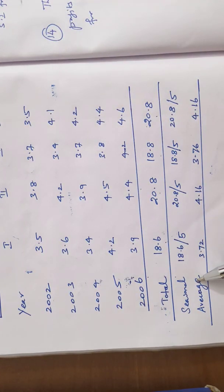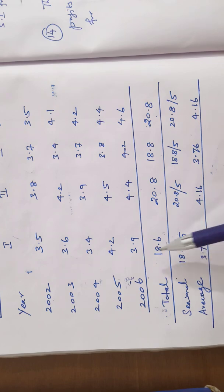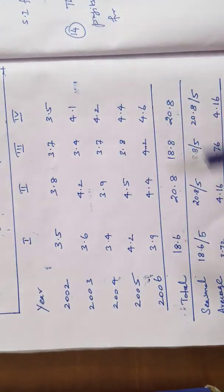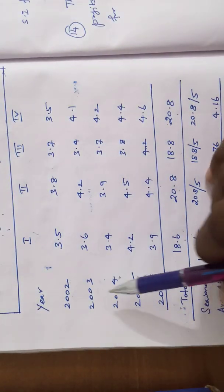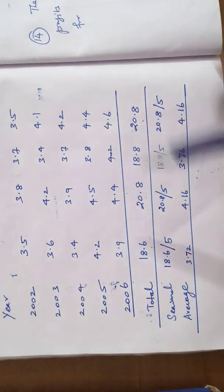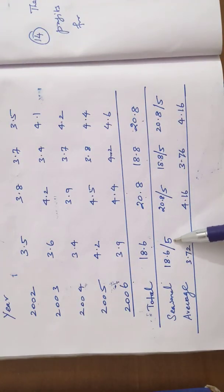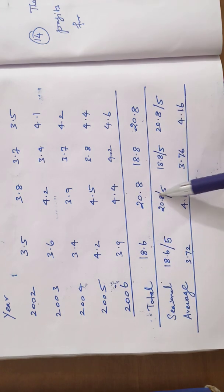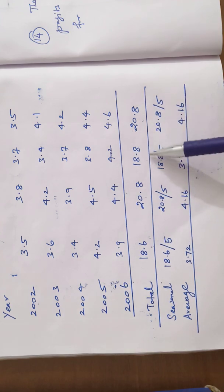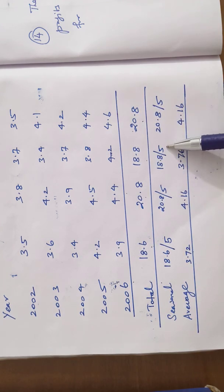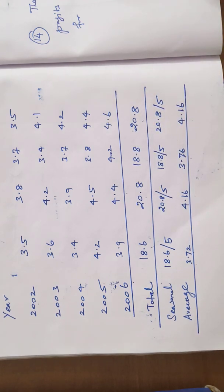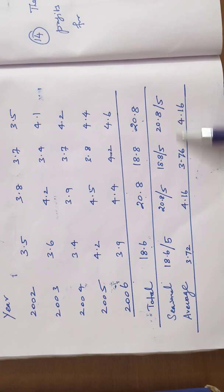Next, find the seasonal average. Seasonal average means the total value is 18.6 dividing throughout by the years 1, 2, 3, 4, 5, so 5 years. The grand total divided by 5 is 3.72. Again 20.8 by 5 is 4.16, and 18.8 by 5 equal to 3.76, and 20.8 by 5 equal to 4.16. These are all the seasonal average for all the four quarters.